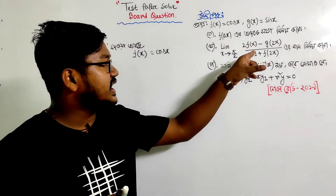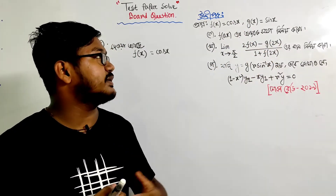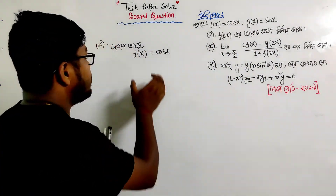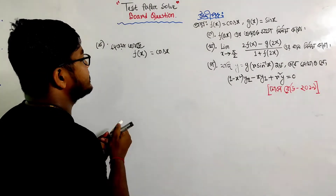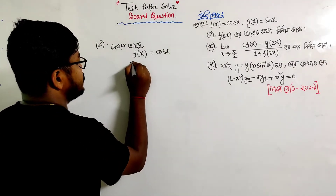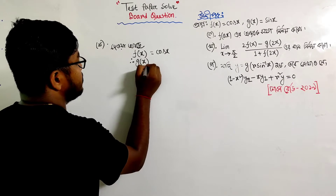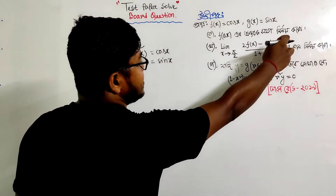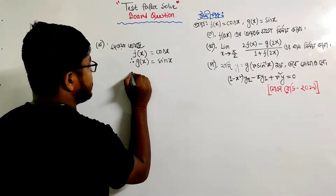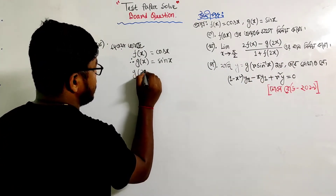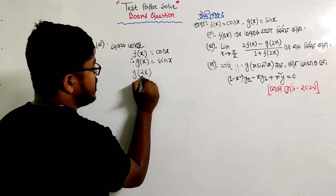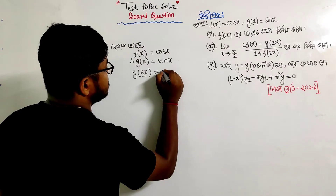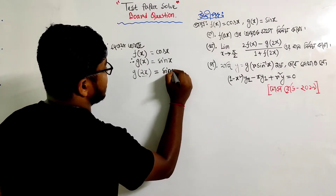Now we will solve this question. So f of x, g(2x), f(2x). We will write f of x, g of x is sin x. We will write the term in the limit — g of 2x. So what is g of 2x? If we use sin x, then sin(2x) means sin x plus sin x, which is 2x.